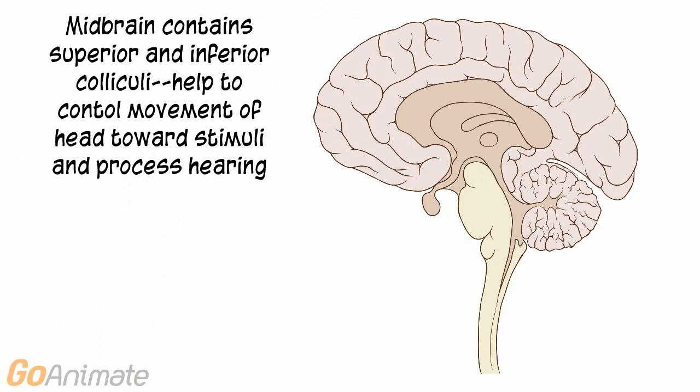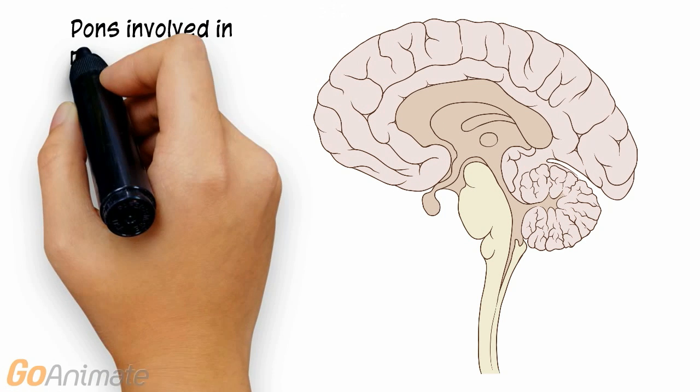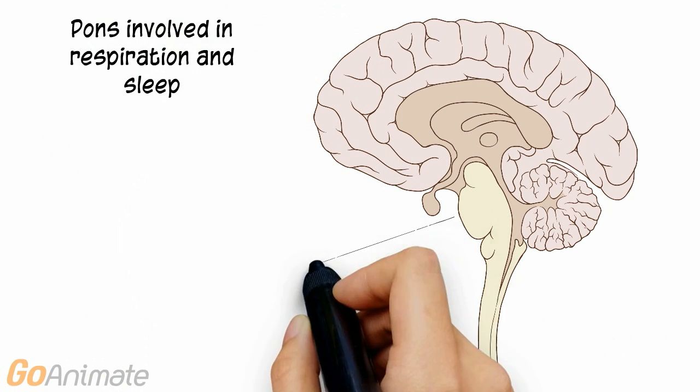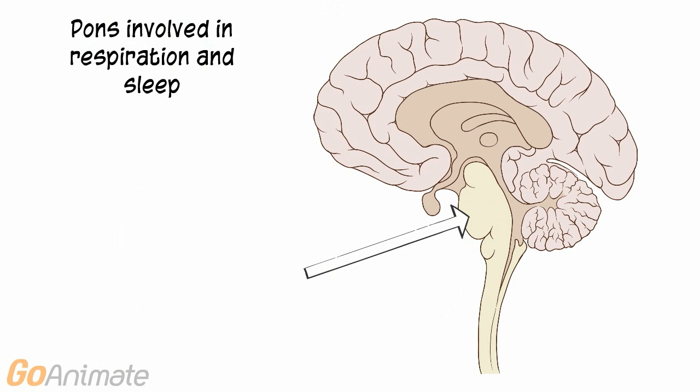Let's look at the brainstem in more detail. The midbrain contains the superior and inferior colliculi, which are involved in controlling movements of the head towards stimuli, as well as hearing. The pons contains respiratory centers and is involved in regulating sleep.